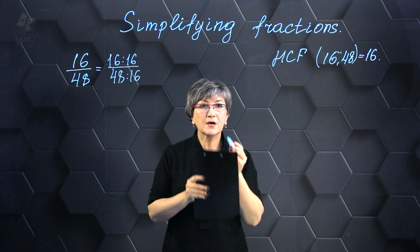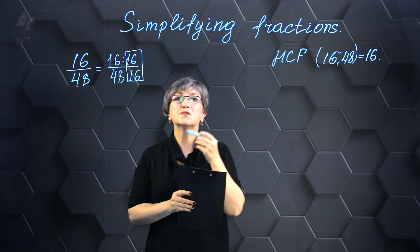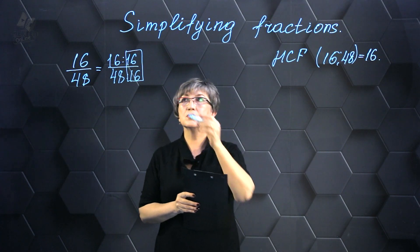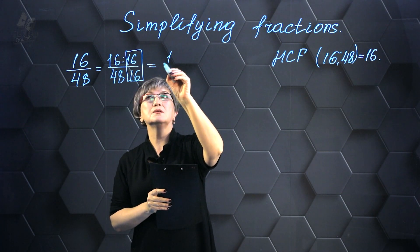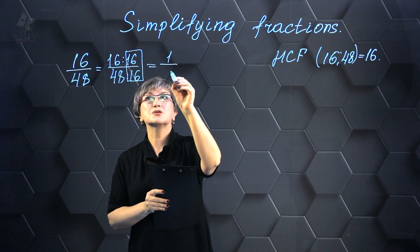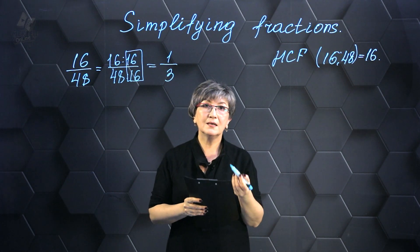It is extremely crucial that when dividing the numerator and denominator, you ensure they have the identical number. And then 16 divided by 16 will equal 1, 48 divided by 16 will equal 3. And it turned out that the fraction was one third.